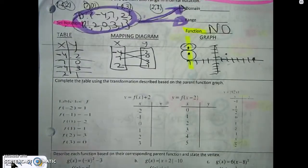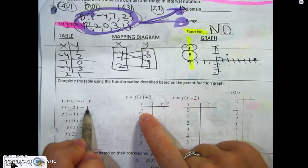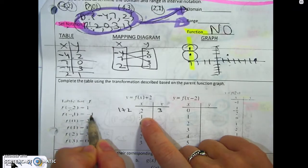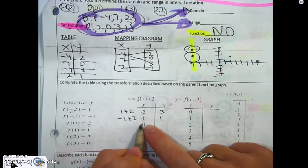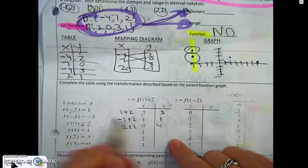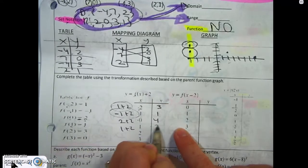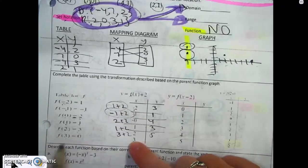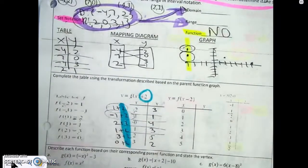With this transformation, take the y-value and add 2 to it. So y equals negative 2 becomes negative 2 plus 2 equals 0. The y-value negative 1 plus 2 equals 1. f of 0 looks like positive 2, and 2 plus 2 is 4. f of 1 is 1 plus 2 equals 3. f of 2 is 3 plus 2 equals 5. f of 3 is 0 plus 2 equals 2. You're just affecting those y-values every single time.